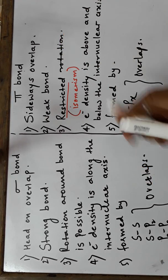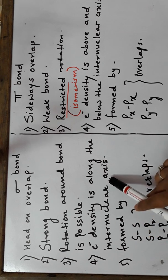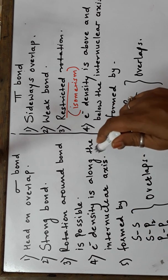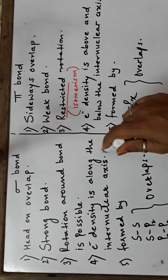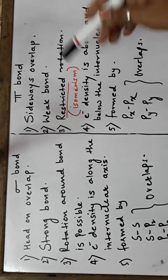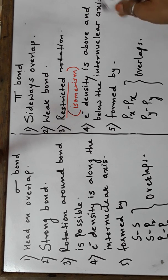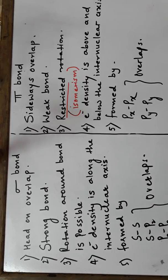The electron density in a sigma bond is concentrated along the internuclear axis between the two nuclei, whereas in a pi bond the electron density is above and below the axis. The various possibilities of overlap for sigma bonds are s-s, s-pz, and pz-pz, whereas for pi bonds it will be px-px and py-py.